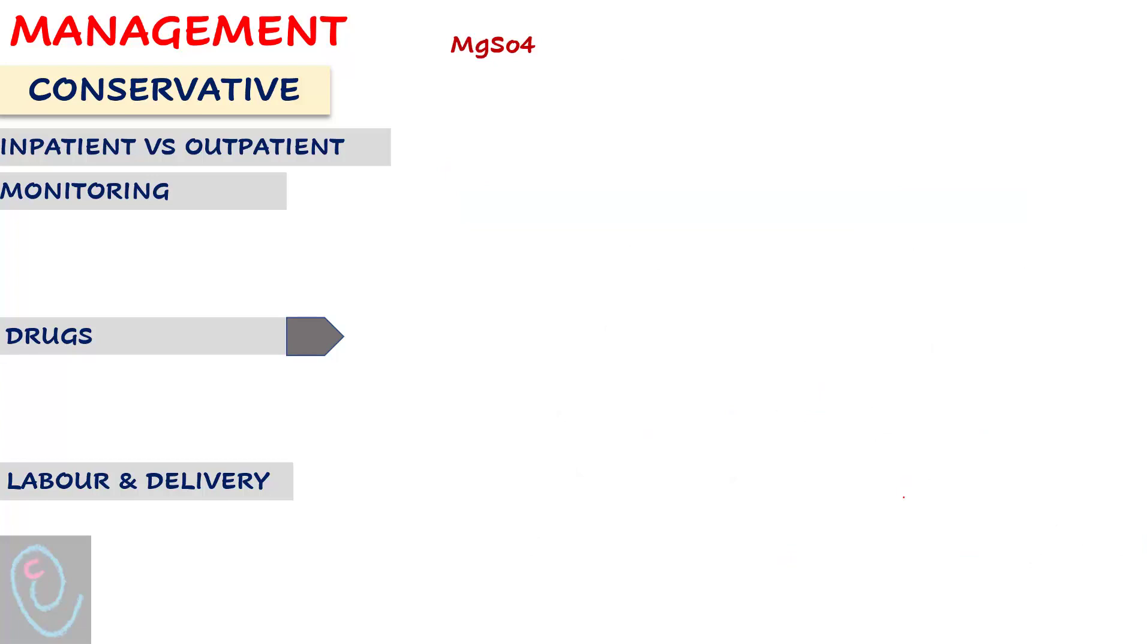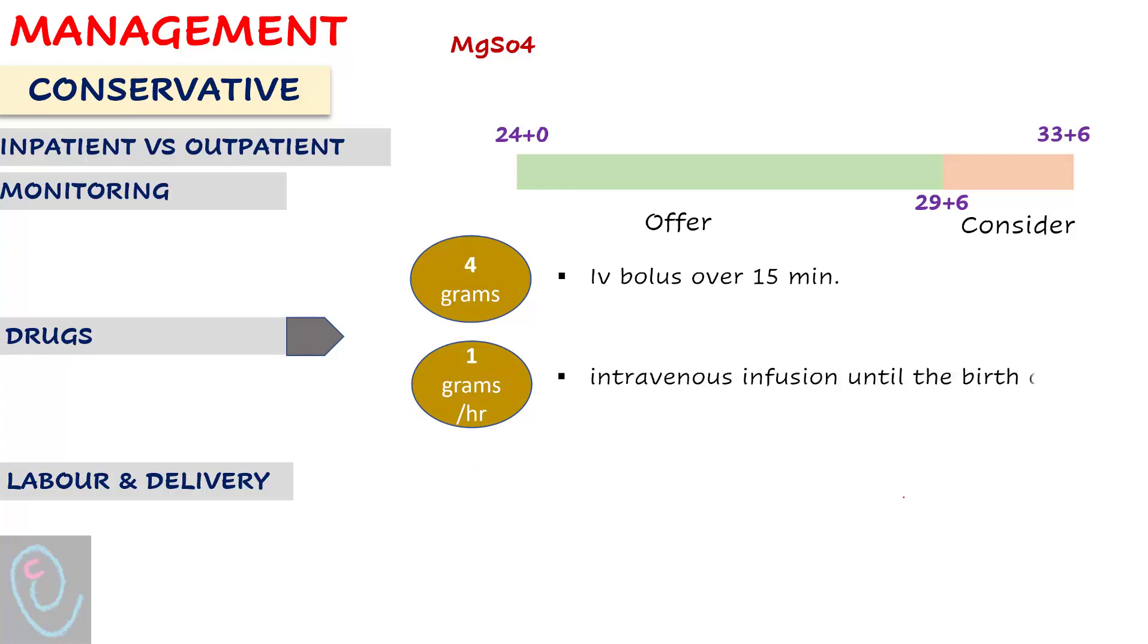Magnesium sulfate is given for established preterm labor or planned birth within 24 hours to reduce the risk of cerebral palsy. It is offered between 24 and 30 weeks and considered between 30 weeks and 34. The dose is 4 grams loading dose, followed by 1 gram per hour infusion until birth or for 24 hours, whichever is sooner.